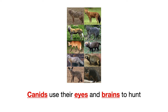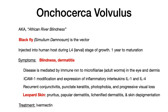Think of a fox using its eyes and brain to hunt — it's a canid, and canid helps you remember Toxocara canis. So remember blindness, meningoencephalitis, and sandboxes — that's Toxocara canis. Now let's talk about Onchocerca volvulus, also known as African river blindness.